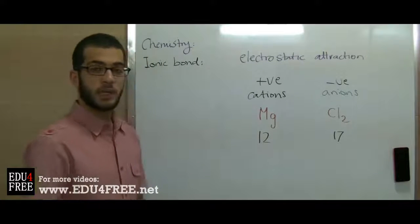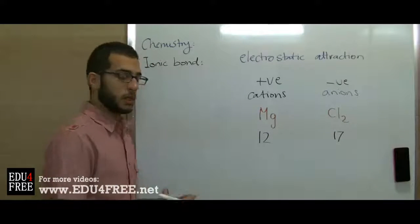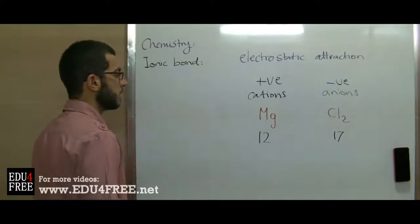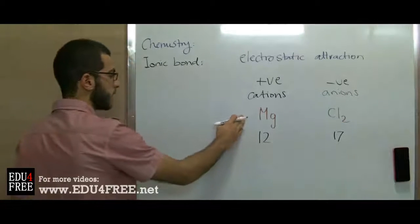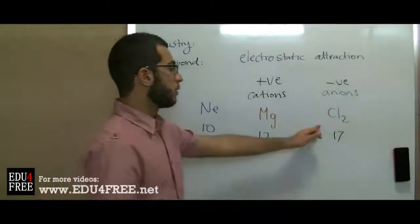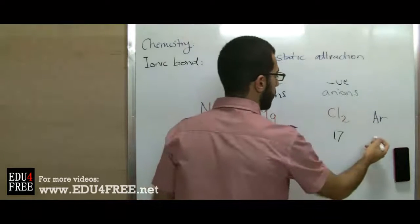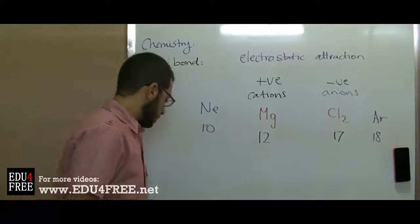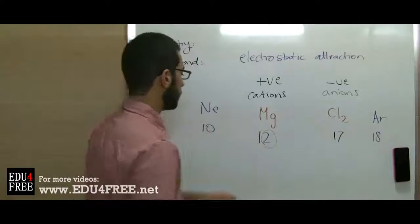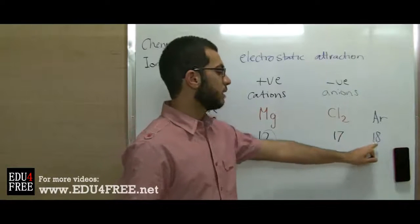The conversion into positive and negative ions depends on the atomic number of the element, in order to help this element reach the same atomic number as the nearest inert gas in the periodic table. The nearest inert gas to magnesium is neon, which has 10 electrons. Chlorine is just before argon, which has the atomic number of 18 electrons. So magnesium needs to lose two electrons to reach 10, and chlorine needs to gain one electron to reach the same atomic number as argon.